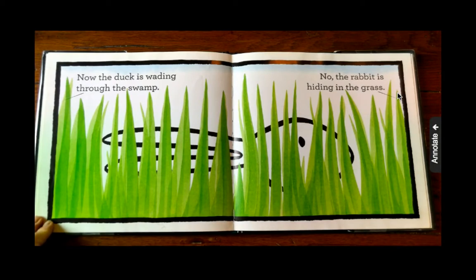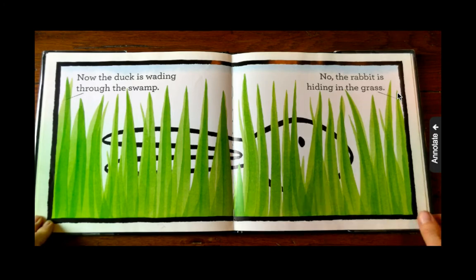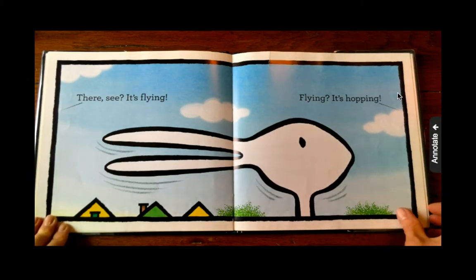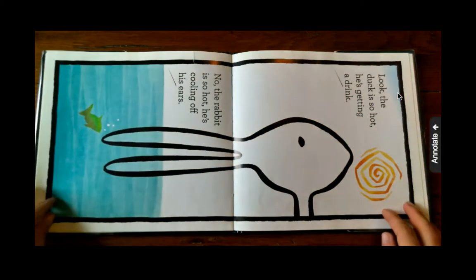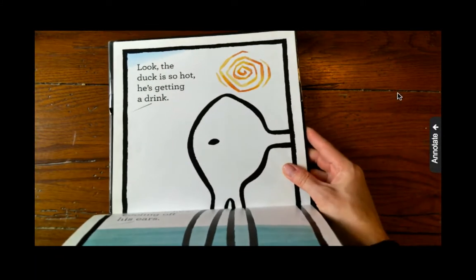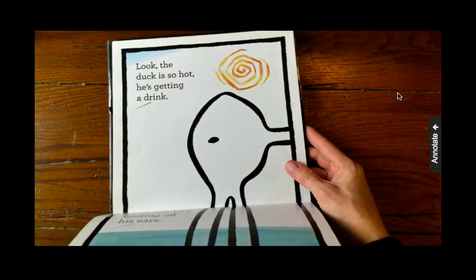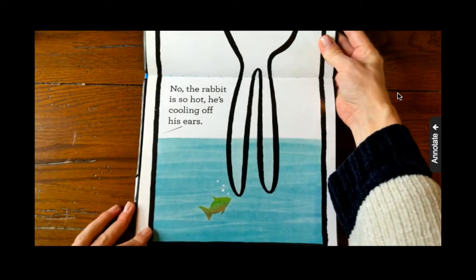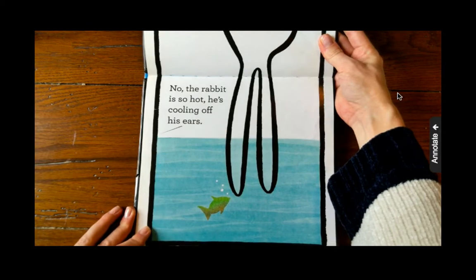Now the duck is wading through the swamp. No, the rabbit is hiding in the grass. There, see? It's flying. Flying? It's hopping. Look, the duck is so hot. He's getting a drink. No, the rabbit is so hot. He's cooling off his ears.